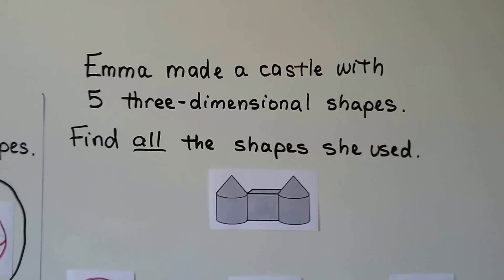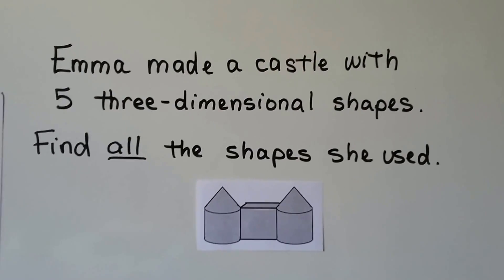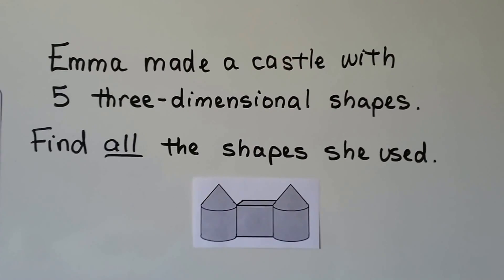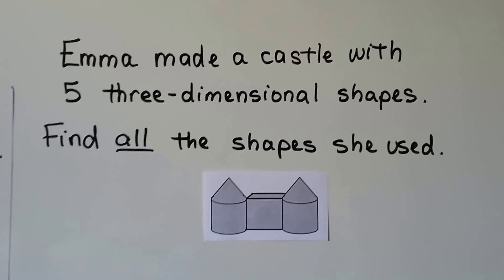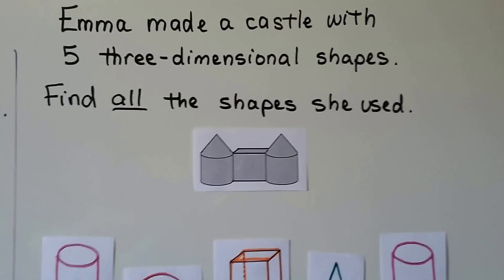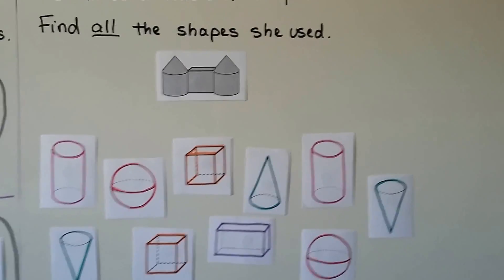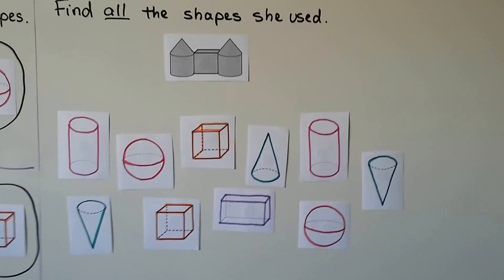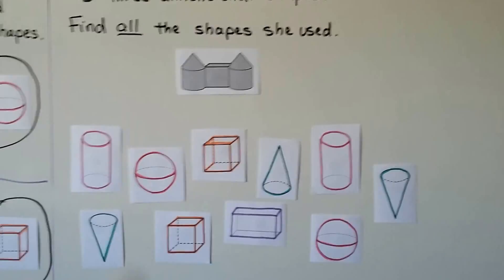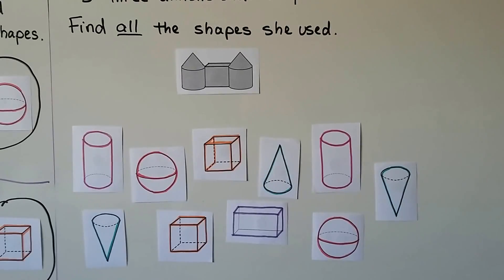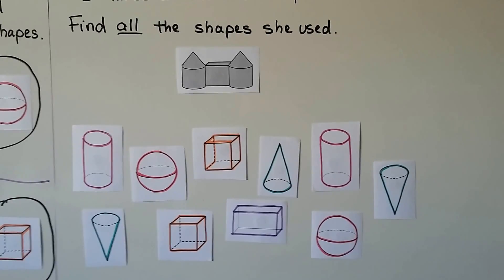Emma made a castle with five three-dimensional shapes. We need to find all the shapes she used. Here are a lot of shapes and we have to figure out which ones she used to make that castle. Which shapes do you see?